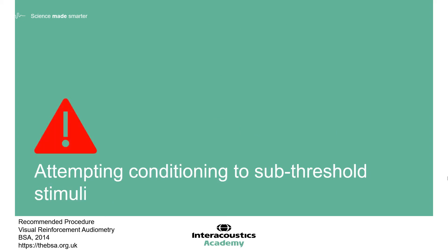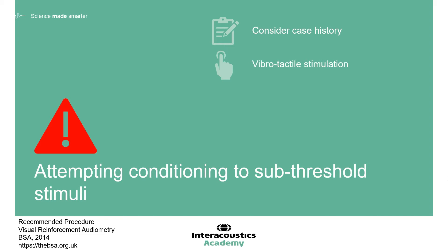It can be easy to inadvertently attempt to condition to sub-threshold stimuli if the child's hearing levels are unknown. Selecting an appropriate conditioning level can be guided by the case history, and any other test results, including previous hearing levels if available. If conditioning is not working, trying vibrotactile stimulation can help establish whether the patient can be conditioned to this type of task using a non-auditory stimulus, which can indicate that they possibly couldn't hear the auditory stimulus, or whether they are simply not ready for this type of task.